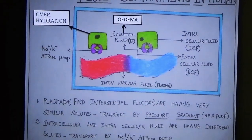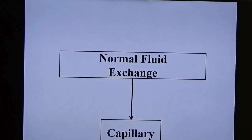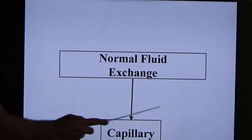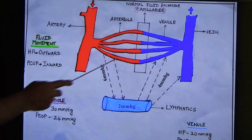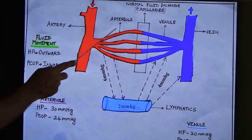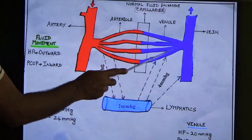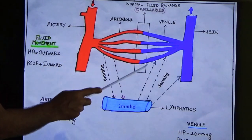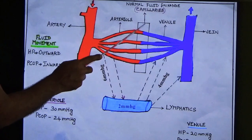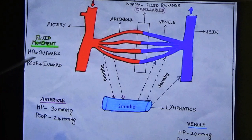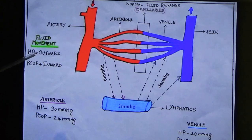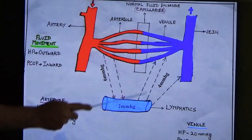Normal fluid exchange occurs at the capillaries. This is flanked by arterioles on one side and venules on the other, with capillaries in the center. Fluid exchange takes place by two pressures: hydrostatic pressure (HP) and plasma colloid osmotic pressure (PCOP). Both the arterial end and venule end have HP and PCOP.